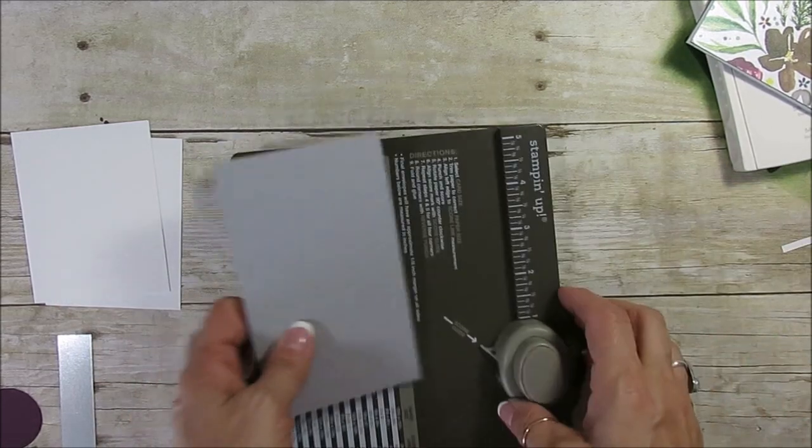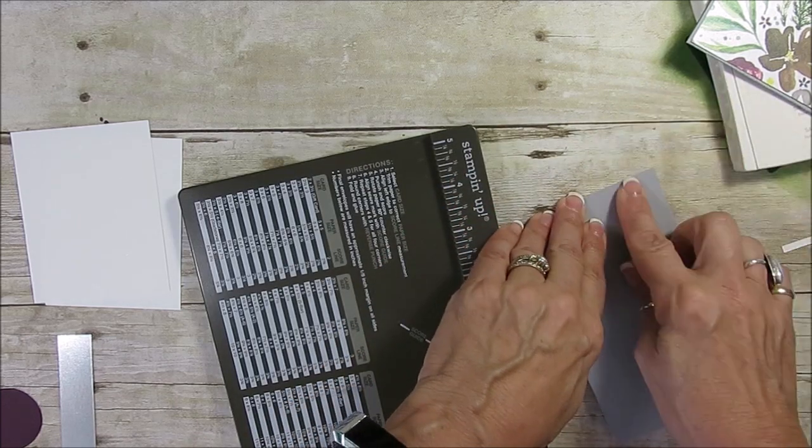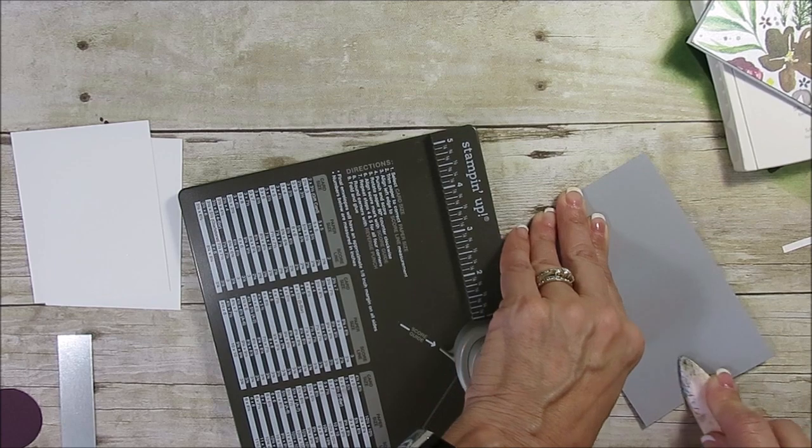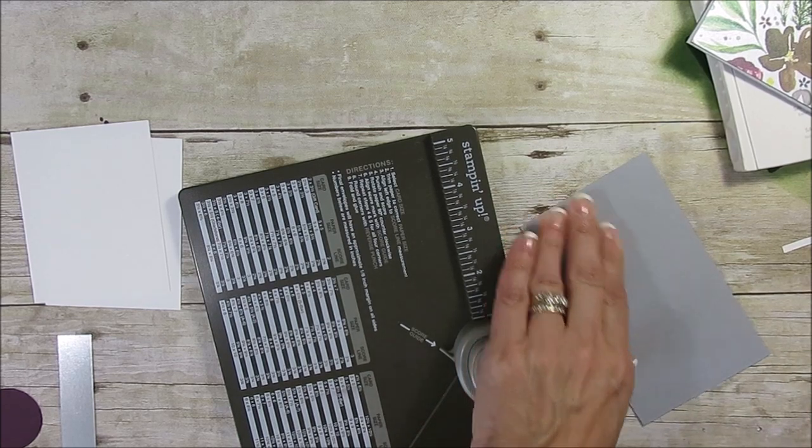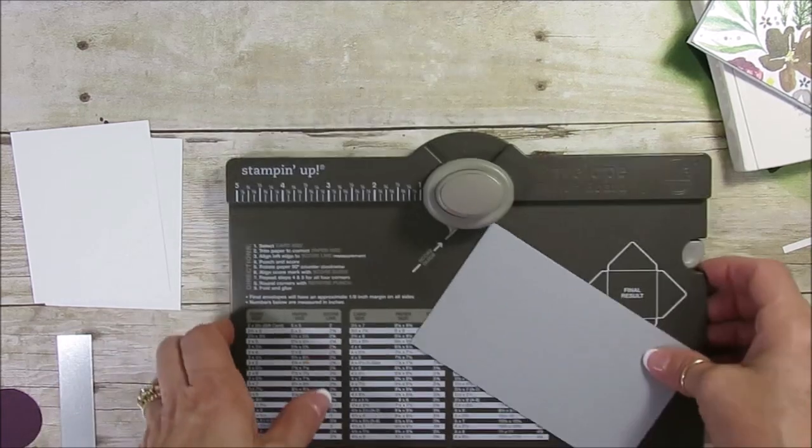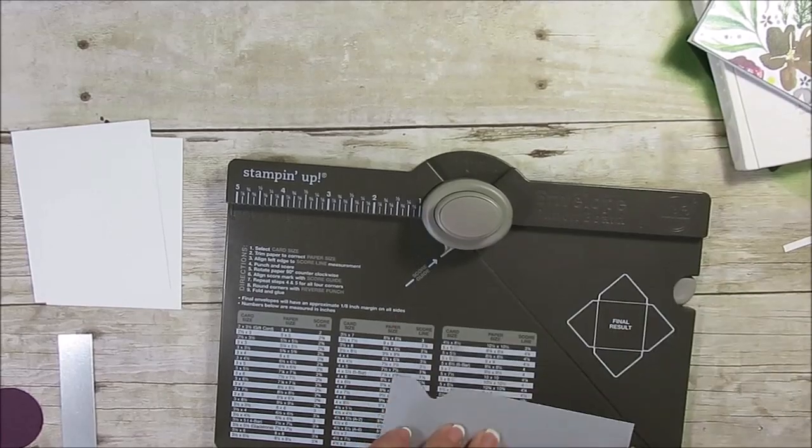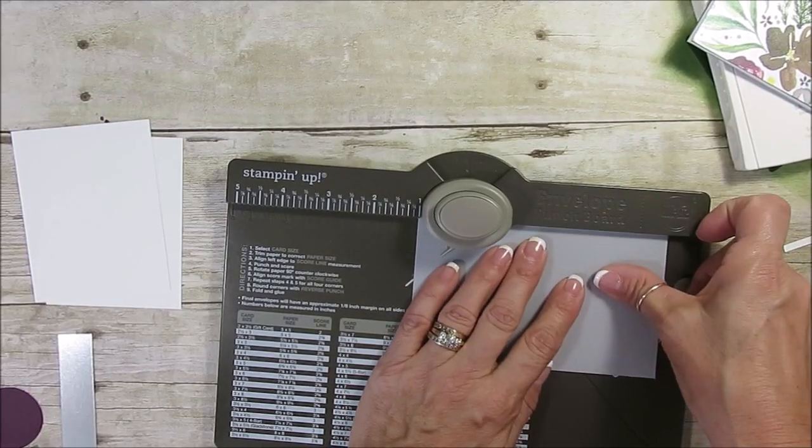Now we're going to take this and keep this fold in two. Make sure it's lined up correctly there. Now we're going to put this on our envelope punch board. Right at one, punch this, turn it around and punch this.